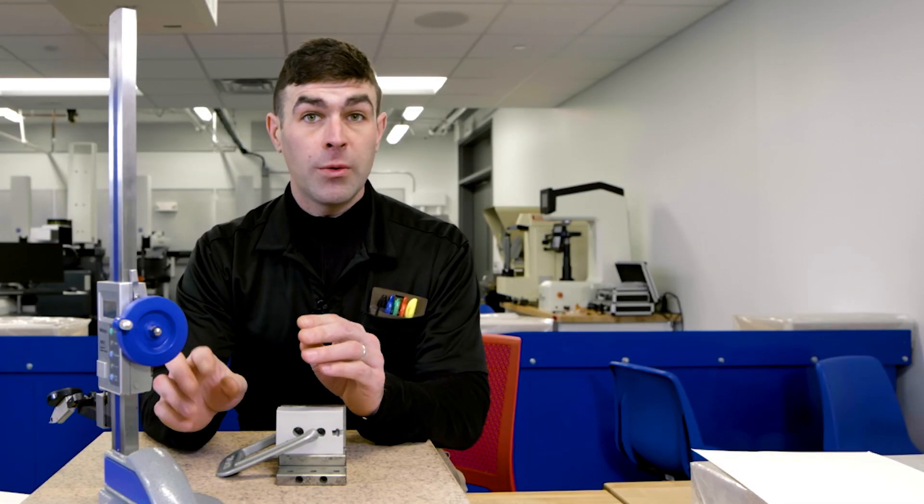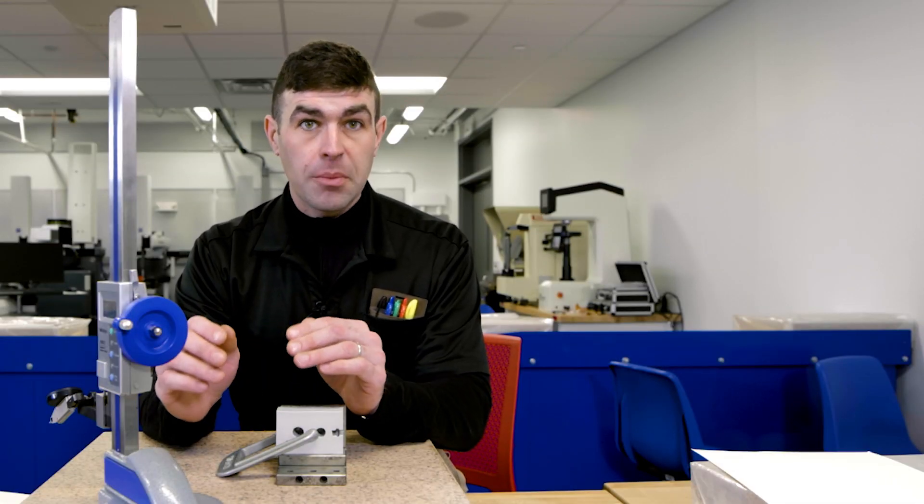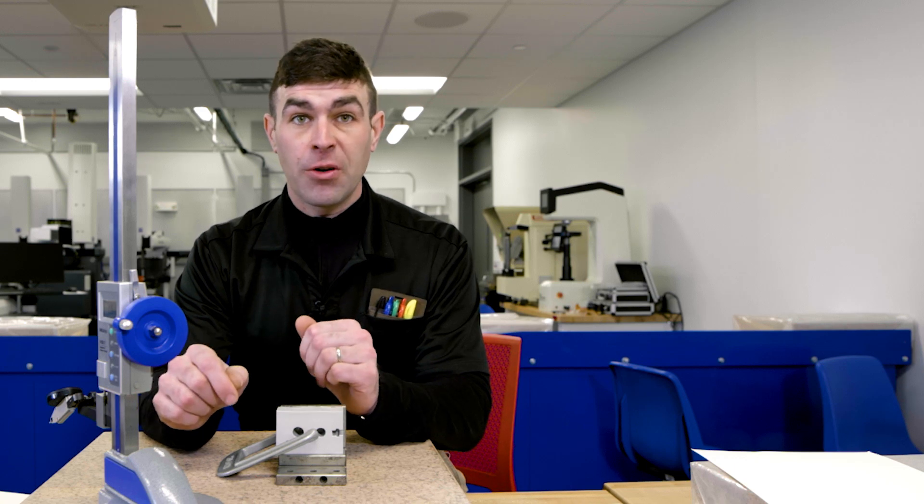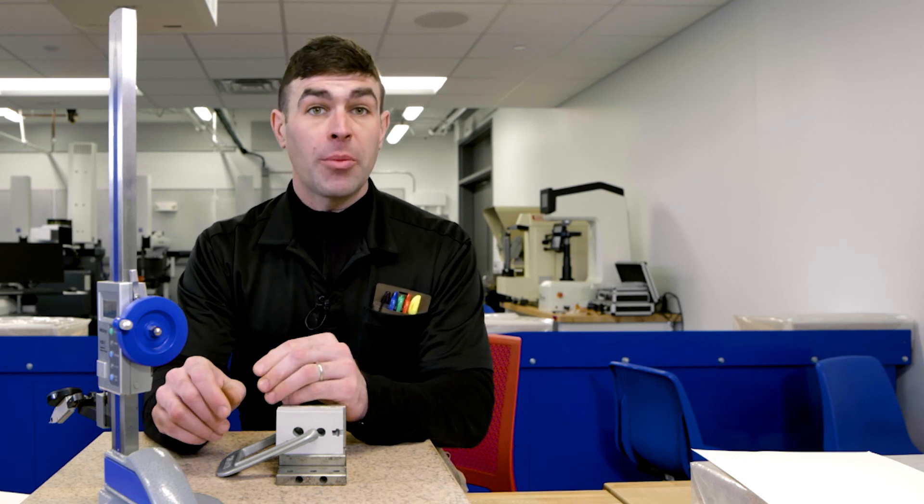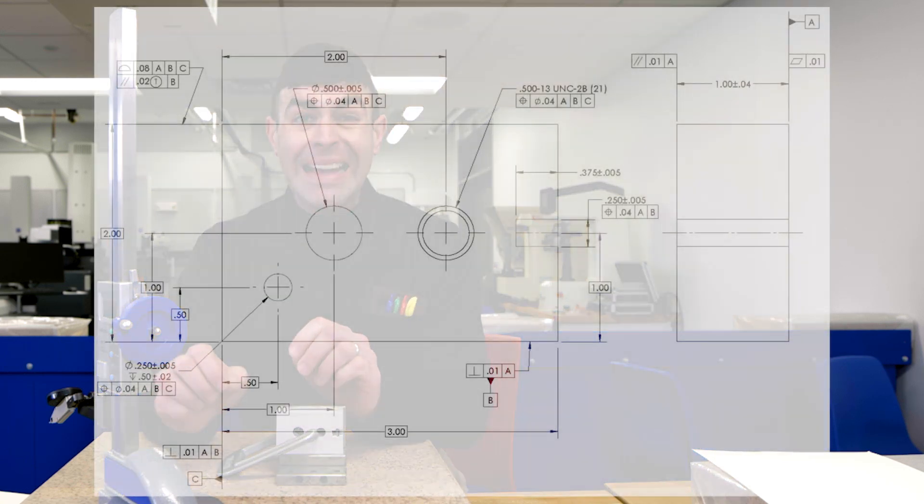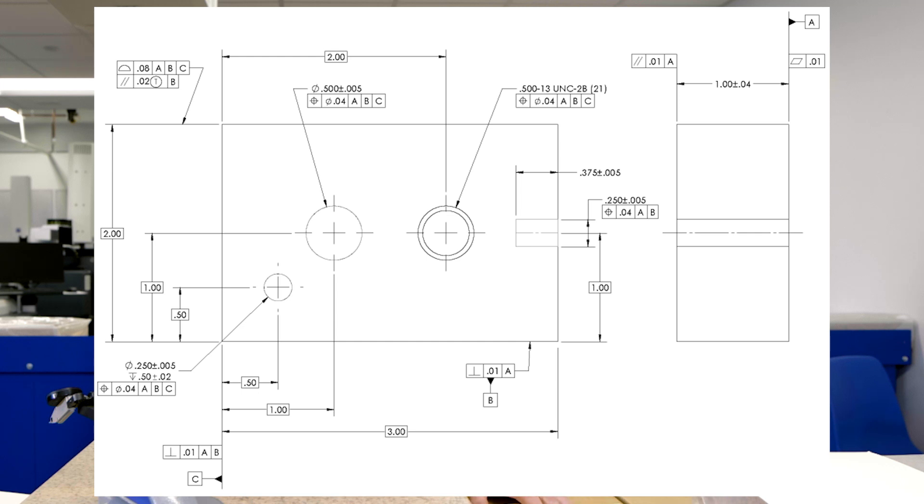In this video, I want to show you one way to measure the position of an internal width feature. I'm going to put the drawing on the screen. We're looking at this width of a quarter inch plus or minus five thousandths with a position tolerance of 40 thousandths to datums A and B.